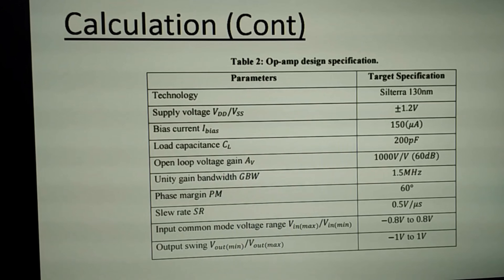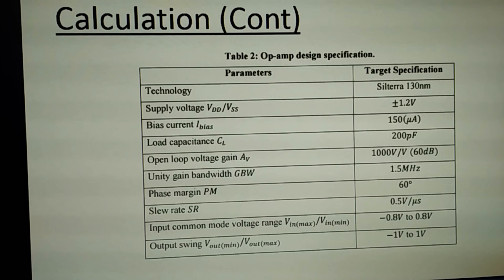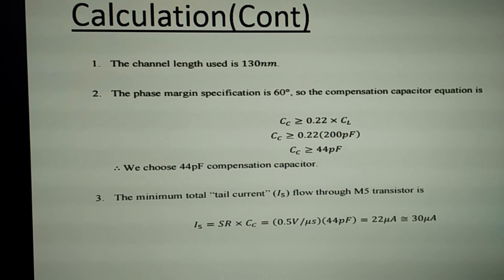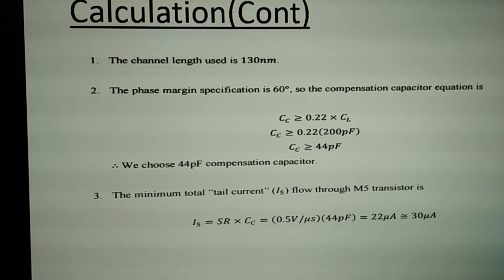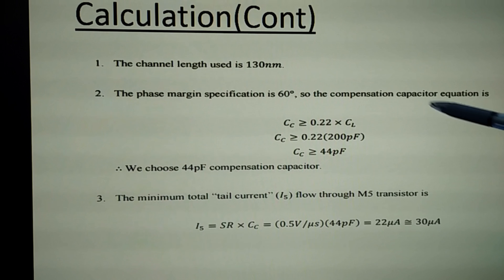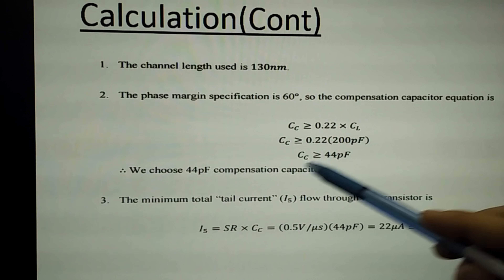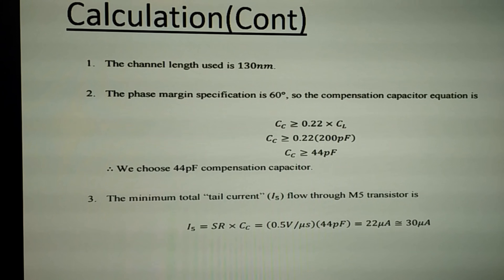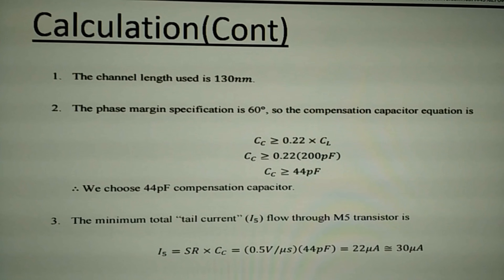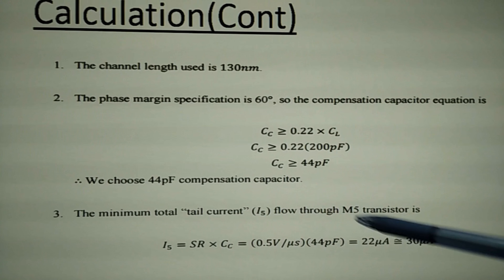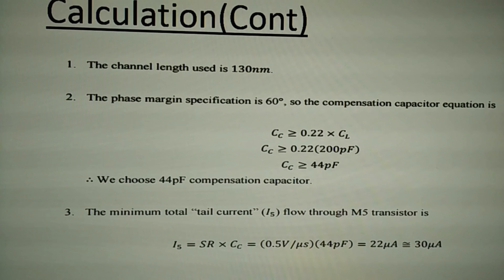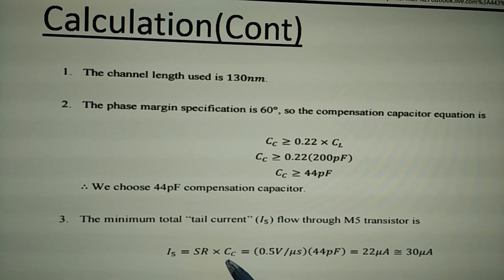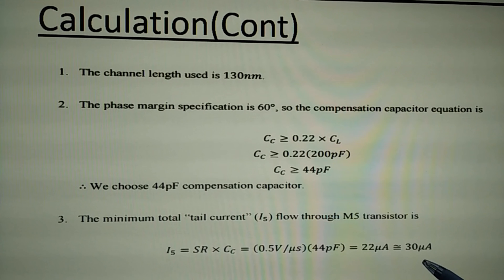Next, we are going to design the aspect ratio for each transistor. The phase margin specification is 60 degrees. The compensation capacitor is derived from the corresponding equation, and we get 44 picofarad. The current flowing through M5 is determined by the slew rate: I5 equals slew rate times the compensation capacitor, giving us 30 microamperes.